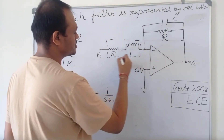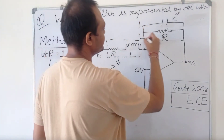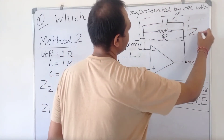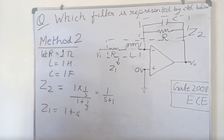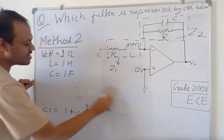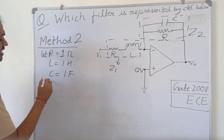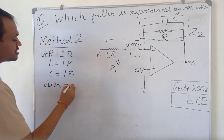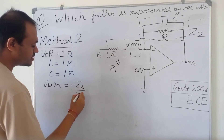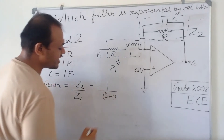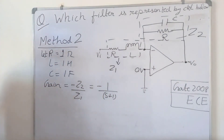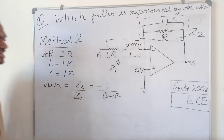This is Z₁ and this is Z₂. This circuit is equivalent to an inverting op-amp with gain equal to minus Z₂ upon Z₁. Since Z₂ = 1/(S+1) and Z₁ = (S+1), the gain equals minus 1/(S+1)².